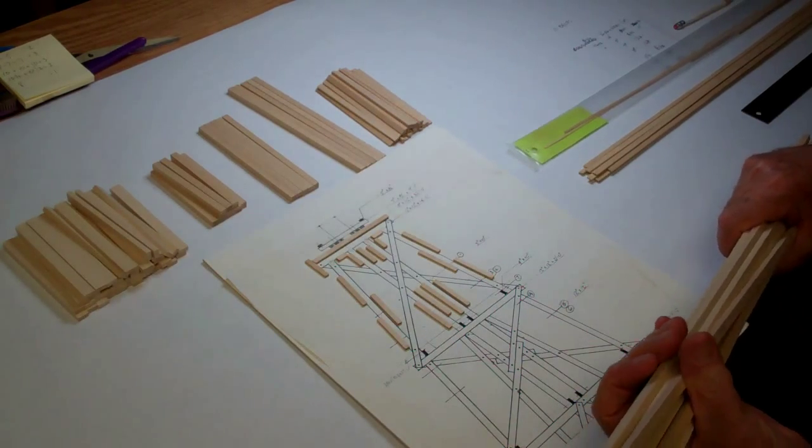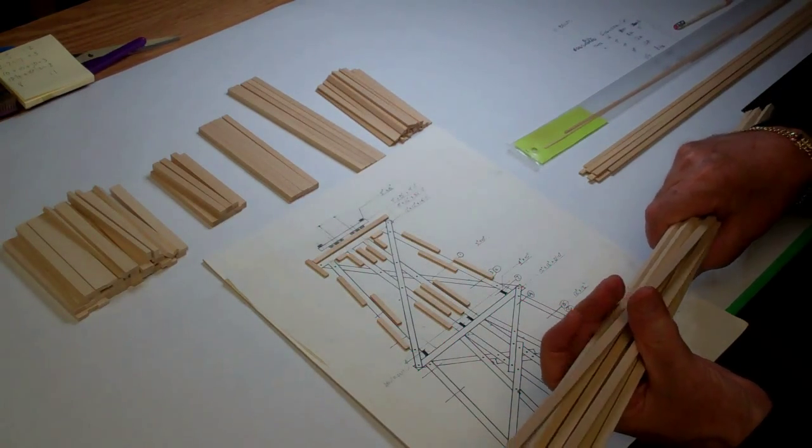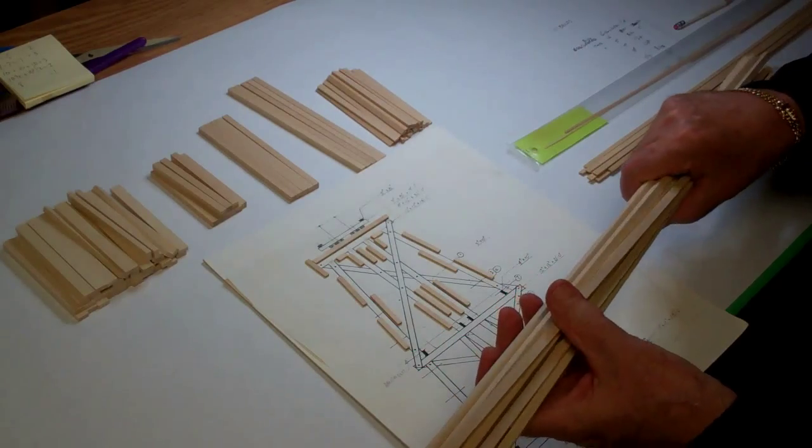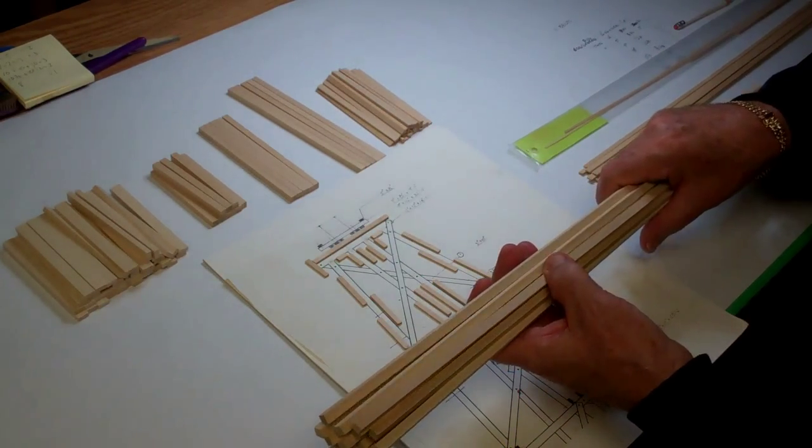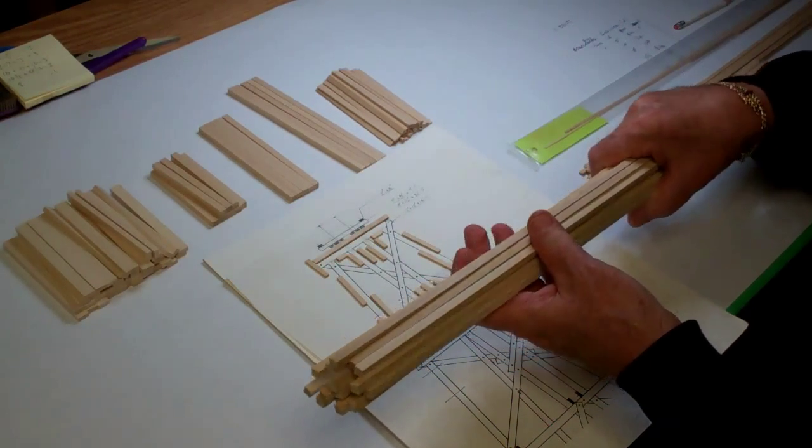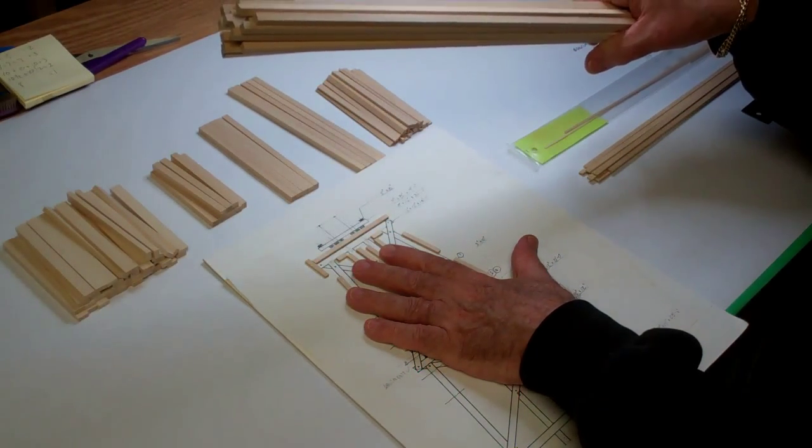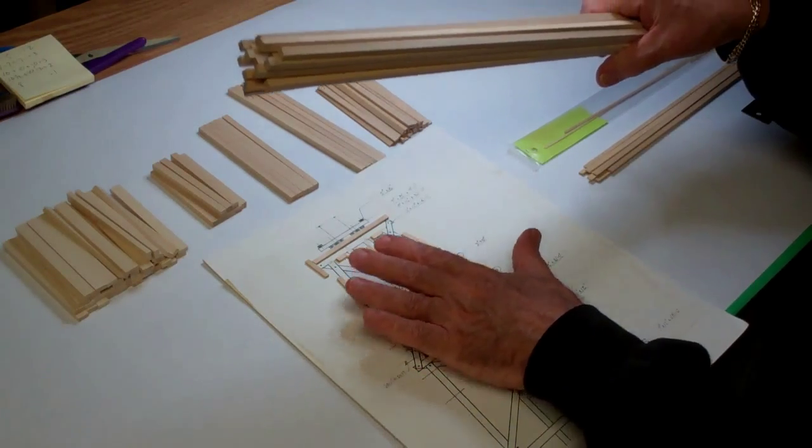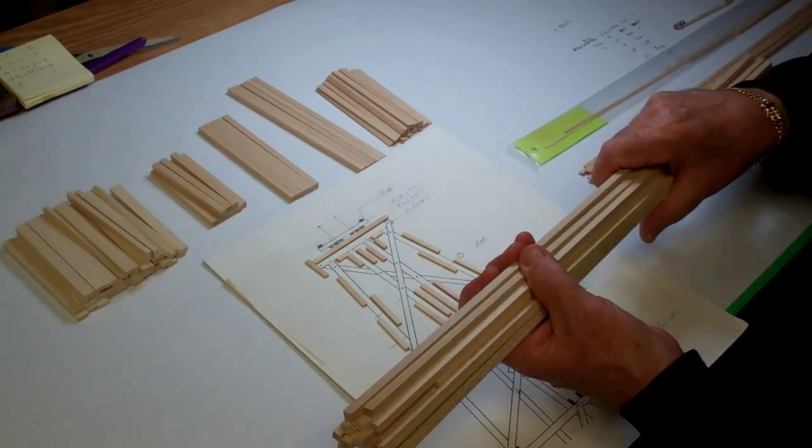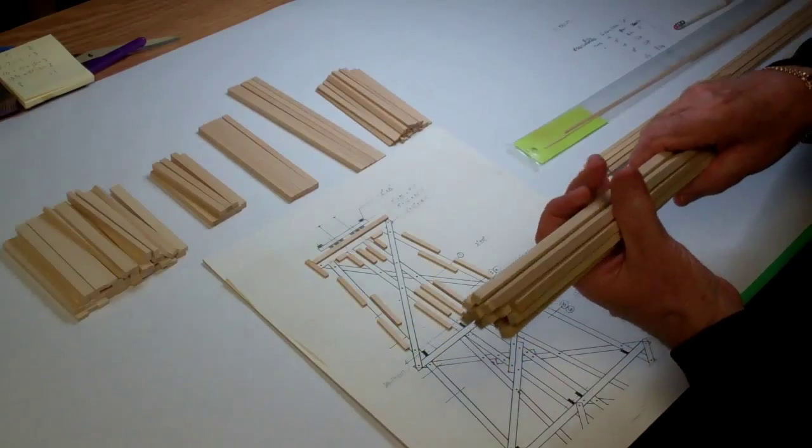The first step in doing the trestles for each end of the Cimarron Bridge, I need to collect and assemble all the lumber that I need. I've worked that out from the plan that I drew up several years ago that I've used for all my trestles, and I've got a collection of lumber here.